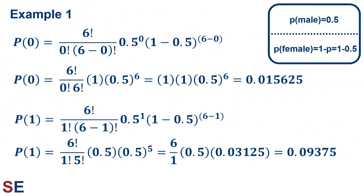This equation simplifies quite a bit. The 6 minus 0 factorial becomes 6 factorial. The 0.5 to the 0 power becomes 1. The 1 minus 0.5 to the 6 minus 0 power becomes 0.5 to the 6th power. The 6 factorials in the numerator and denominator cancel, giving us 1 times 1 times 0.5 to the 6th power, which equals 0.015625.